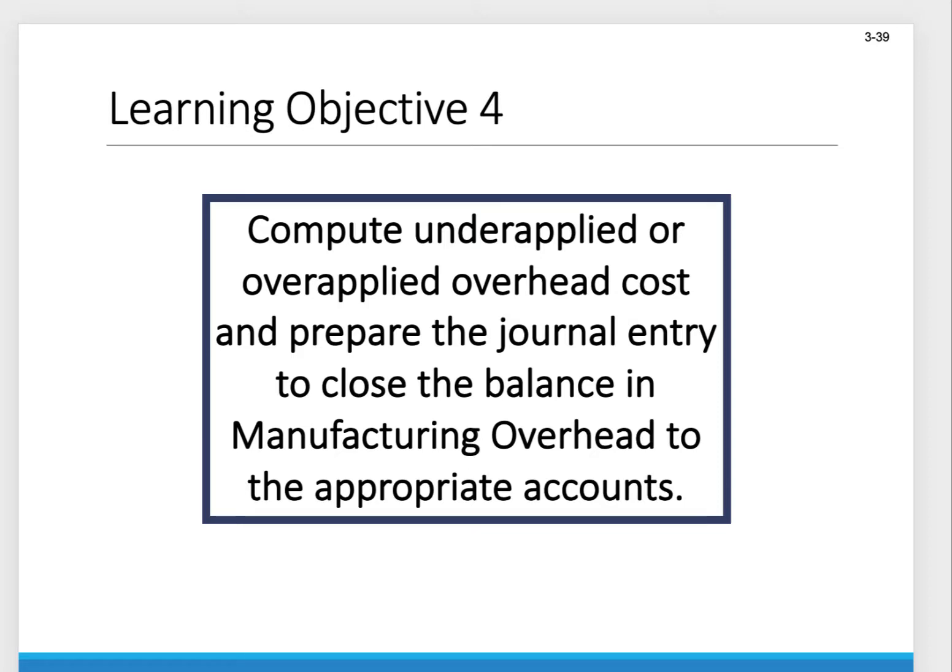Hello and welcome to our third video lecture dealing with Chapter 3. We're talking about job order costing, cost flows, and external reporting. Up to this point we've already seen how costs flow through the costing system, how to prepare the cost of goods manufactured statement, and how to calculate cost of goods sold. In this video we're going to look at manufacturing overhead — specifically how to calculate underapplied and overapplied, and how to fix either one.